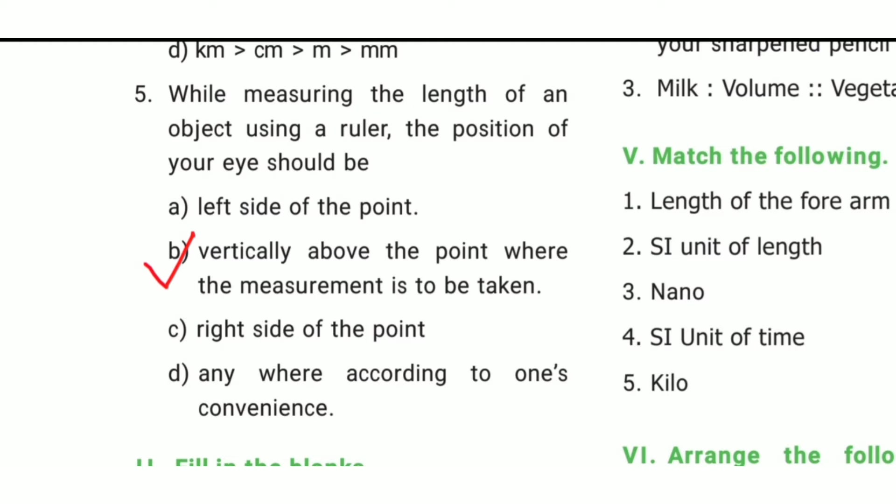Fifth one: While measuring the length of an object using a ruler, the position of your eye should be dash. The answer is option B — vertically above the point where the measurement is to be taken.